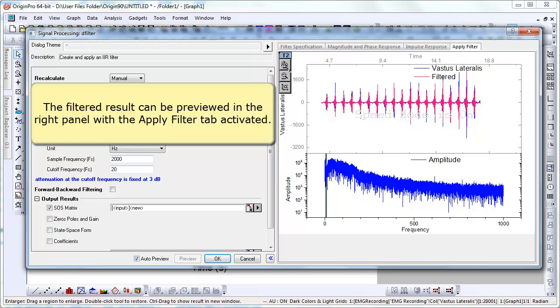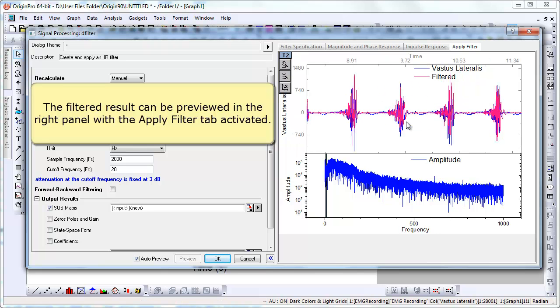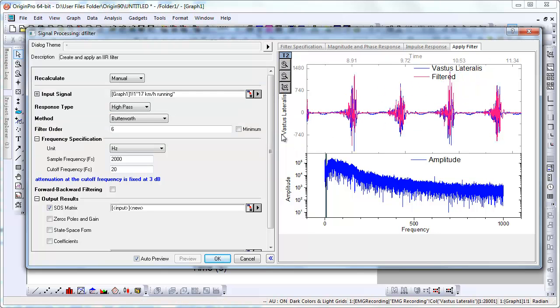The filtered result can be previewed in the right panel with the Apply Filter tab activated. We can zoom in on the graph further, right in the preview.